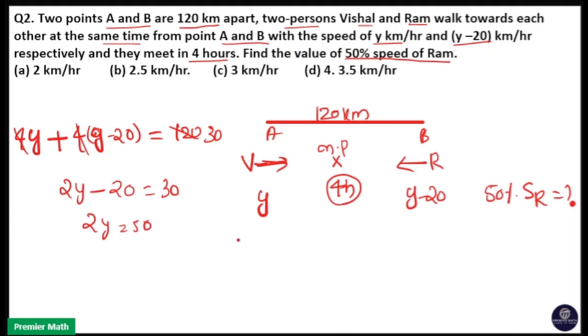So 2Y equals 50, which means speed of Vishal is 25 km per hour. That means speed of Ram will be 5 km per hour. Therefore, 50% speed of Ram equals 5 by 2, that is 2.5 km per hour. So option B is your answer.